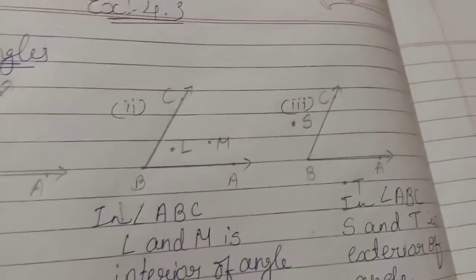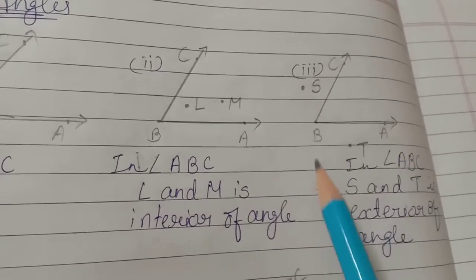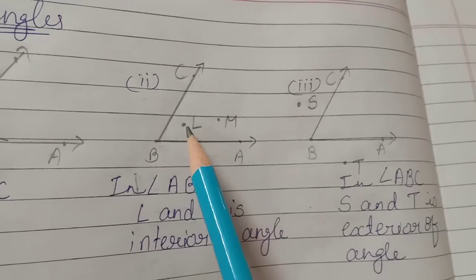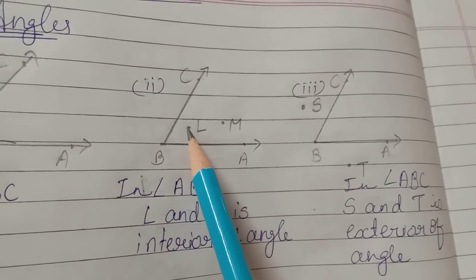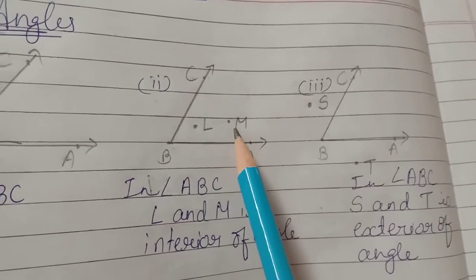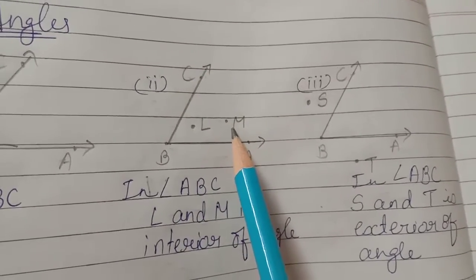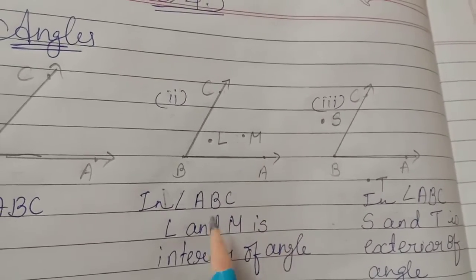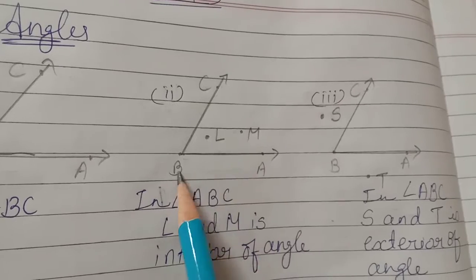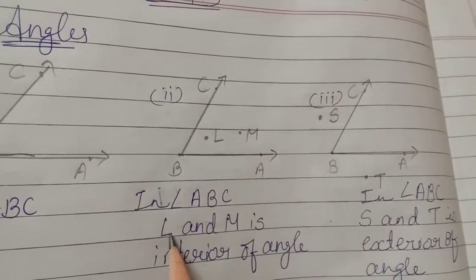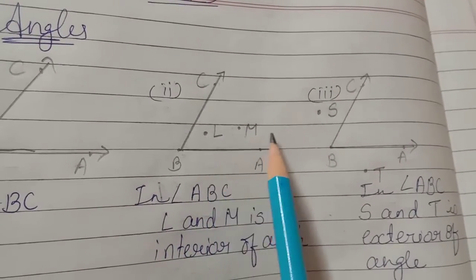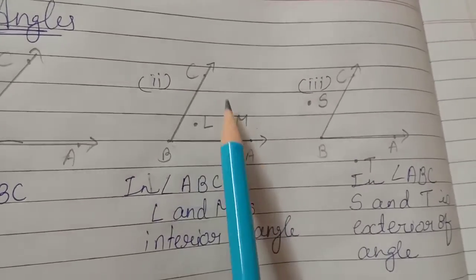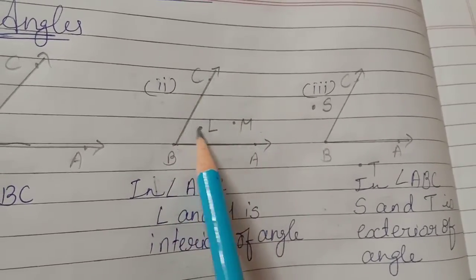In the second example, one angle is given. In the angle, there are some points given. It is called the interior of an angle. Can you see here? In angle ABC, L and M are in the interior of the angle, because they are given inside of the angle.